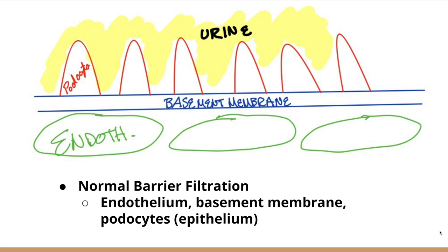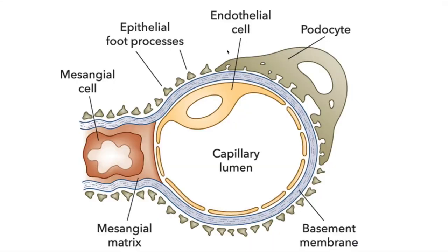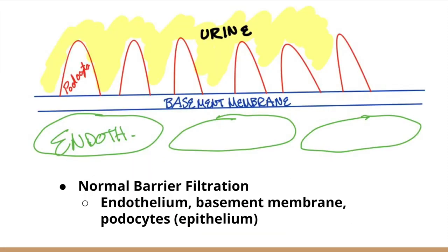When we talk about nephrotic syndrome, essentially we're talking about a barrier problem. This is a normal filtration barrier. Here we have an endothelium, the basement membrane, and these podocytes which are the epithelium, and then you have urine. Blood is flowing through the lumen and it's going to cross the basement membrane past the podocytes, filter through, and end up going through the urine. That's just normal anatomy.